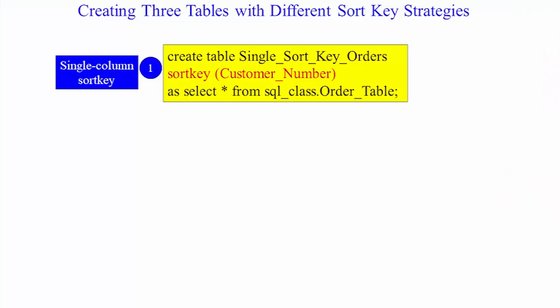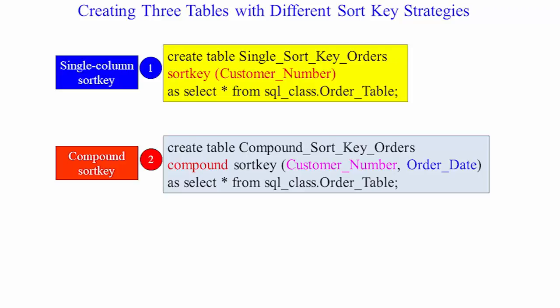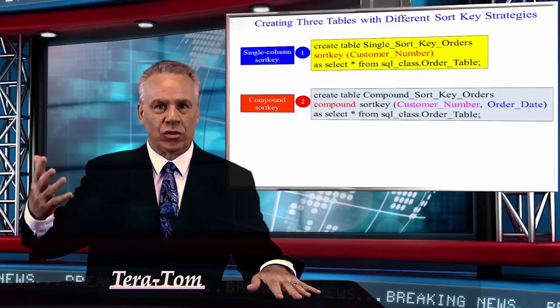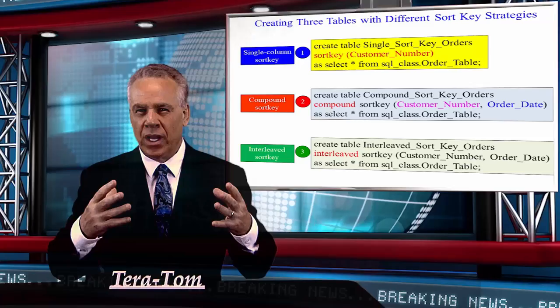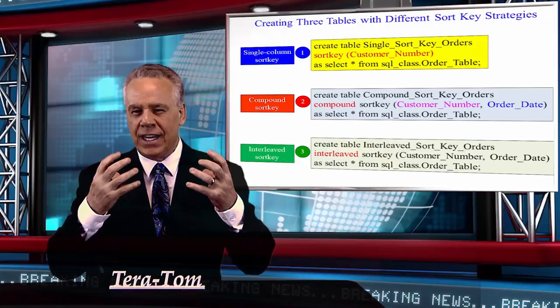You can have a single sort key. You can have a compound sort key, which is really multiple sort keys, just like you're used to seeing an order by statement with multiple sort keys in that statement. But you can also have an interleaved sort key. What's so interesting about an interleaved sort key is that it gives equal weight to each and every column in that sort key. And I'm going to explain all three right here, right now.